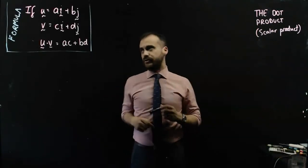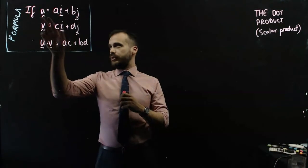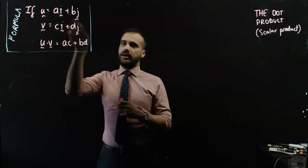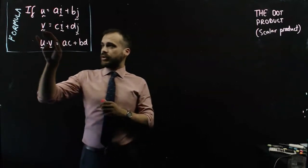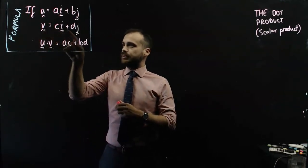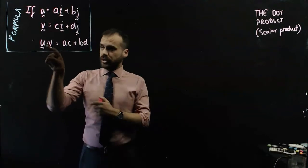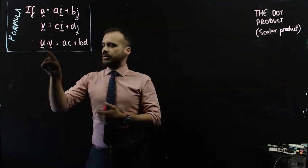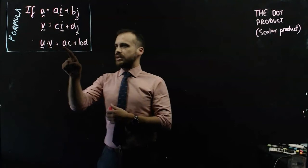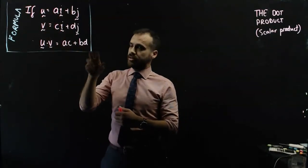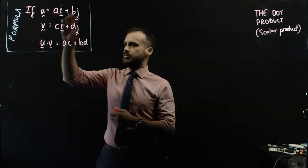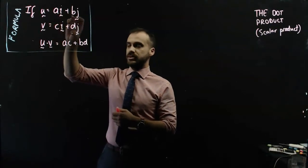So here's our formula for the dot product. If we've got a vector and it's equal to ai plus bj, where a and b are numbers, and we've got another vector, v equals ci plus dj, we can do something called the dot product, which is represented with a dot. We can say that u dot v is equal to ac, these numbers, multiplied by, added to bd, these numbers. So this times this plus this times this.